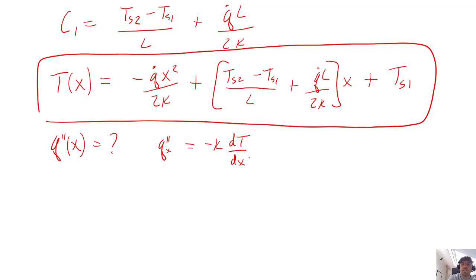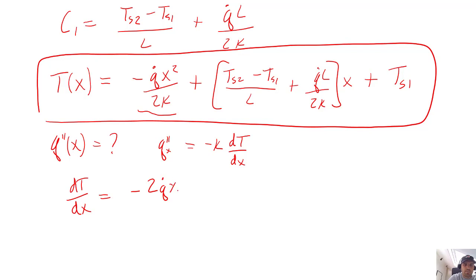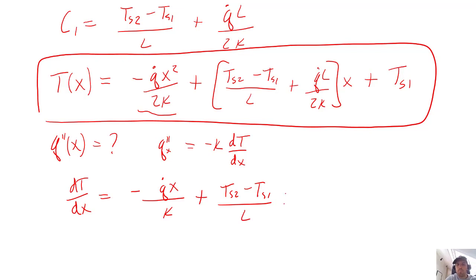Differentiating T(x), the first term gives minus 2 times q-dot times x over 2k — the 2's cancel, giving minus q-dot·x/k. The derivative of the second term with respect to x is just its coefficient: (Ts2 minus Ts1)/L plus q-dot·L/(2k). The derivative of the constant Ts1 is zero. So we have our dT/dx expression. The flux q-double-prime in the x direction is that whole expression multiplied by minus k.